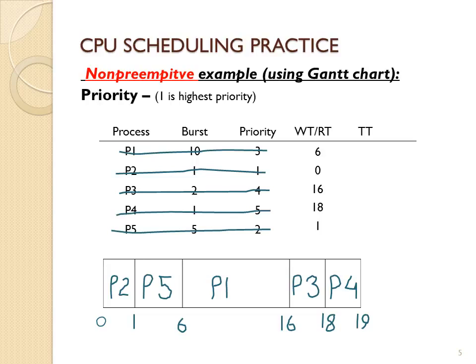P1 arrived at time zero and first got the CPU at time six, so P1's wait time is six. P2 arrived at time zero and first got the CPU at time zero, so P2's wait and response time is zero. P3's wait and response time is 16, P4's is 18, and P5 waited one time unit before getting the CPU. For turnaround time, you take the last time when it terminated and subtract the arrival time: P1 finished at time 16, P2 at time 1, P3 at time 18, P4 at time 19, and P5 at time six. Add them all up and divide by five to get the average wait time and average turnaround time.